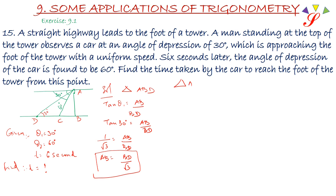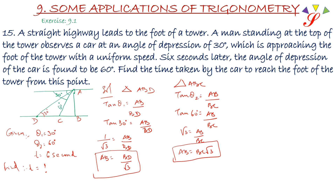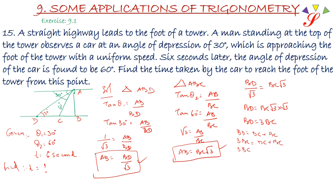Next is triangle ABC. Tan theta 2 equals AB upon BC. Tan 60 equals AB upon BC, and tan 60 is root 3, so AB equals BC times root 3. Now equating: BD upon root 3 equals BC times root 3. Therefore BD equals BC times root 3 times root 3, so BD equals 3BC. Since BD equals DC plus BC, we get 3BC equals DC plus BC, so 2BC equals DC. This means BC equals DC divided by 2.